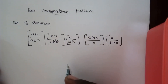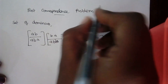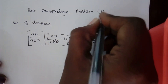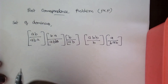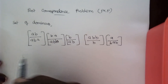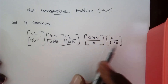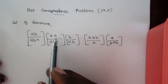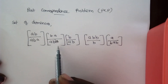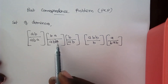Hello everyone. In this session we are going to see what a Post Correspondence Problem is. A Post Correspondence Problem — we usually call it as a PCP problem. This is a puzzle problem. The input to this is some set of elements expressed in numerator and denominator. A single set we call it as a single domino.